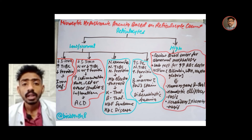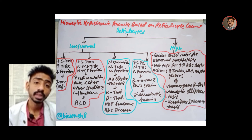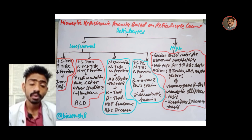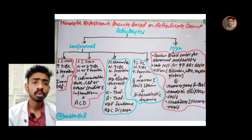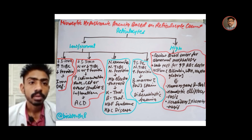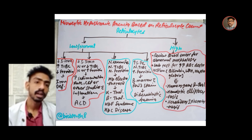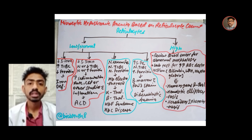If reticulocyte count is low or normal with normal serum iron, normal TIBC, and normal ferritin, and HbEPG electrophoresis is positive for abnormal hemoglobin variants, it is thalassemia — which can be alpha, beta, HbE, or HbC disease. If reticulocyte count is low or normal with increased serum iron, increased ferritin, and bone marrow showing positive Perl's stain (indicating iron deposition in tissue), it is sideroblastic anemia.